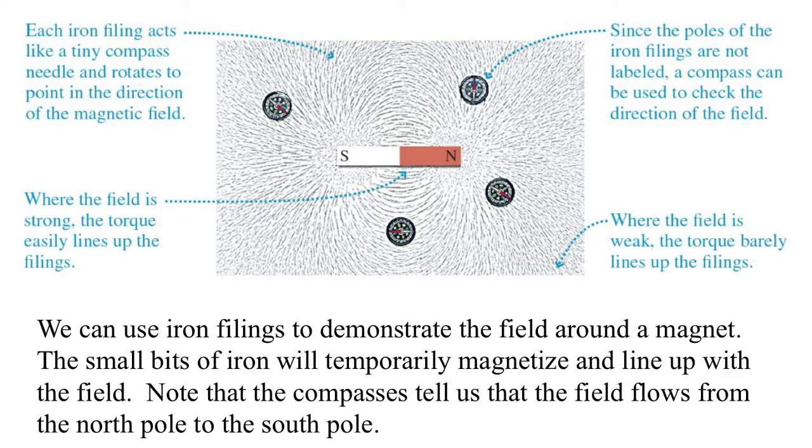We can use iron filings to demonstrate the field around a magnet. The small bits of iron will temporarily magnetize and line up with the field. Notice that the compasses tell us the field flows from the north pole to the south pole. The idea is that these little bits of iron get magnetized and then spin to align, and so they kind of map out where the field is. And the direction of a magnetic field is along the direction the north is pointing.